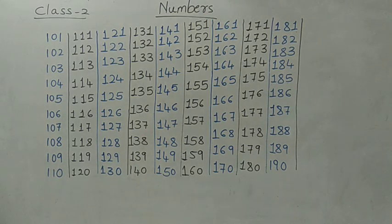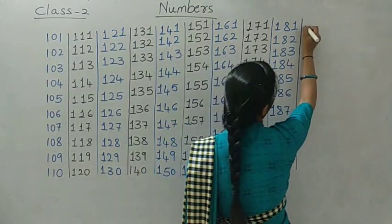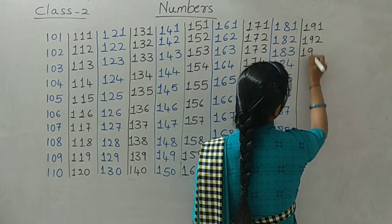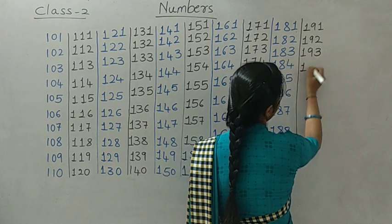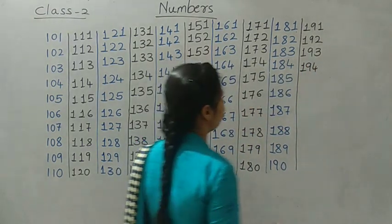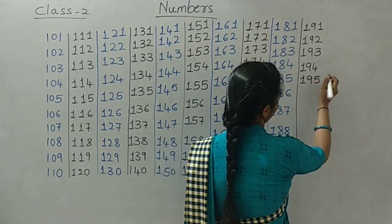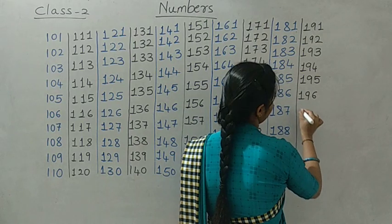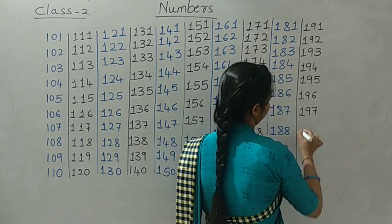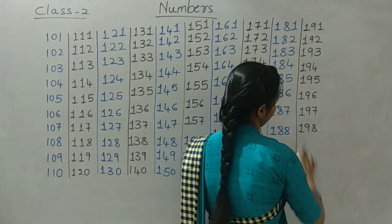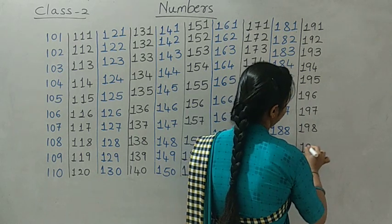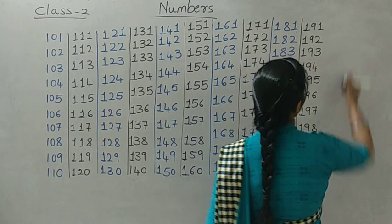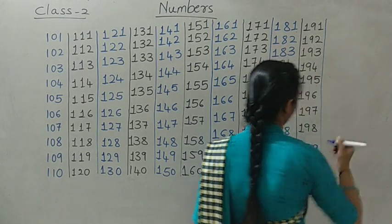Okay, now we will see the next line — the last line. Okay, start writing: 191, 192, 193, 194, 195, 196, 197, 198, 199, 200 — the last one, 200. Take a scale and draw a proper straight line.